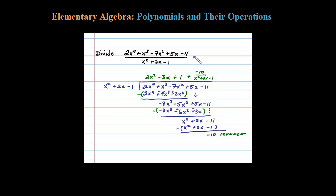So the final result when dividing these polynomials is 2x squared minus 3x plus 1, minus 10 over x squared plus 2x minus 1.